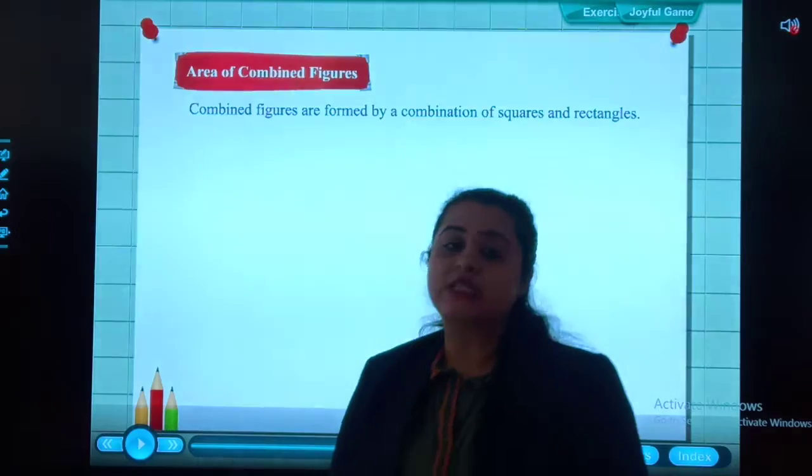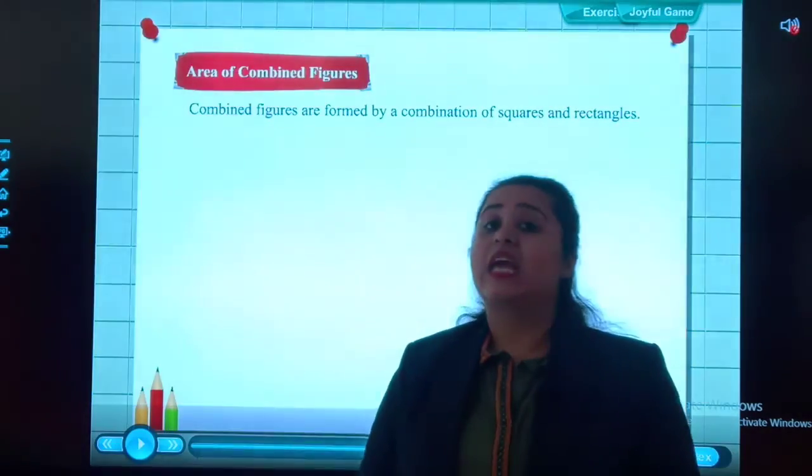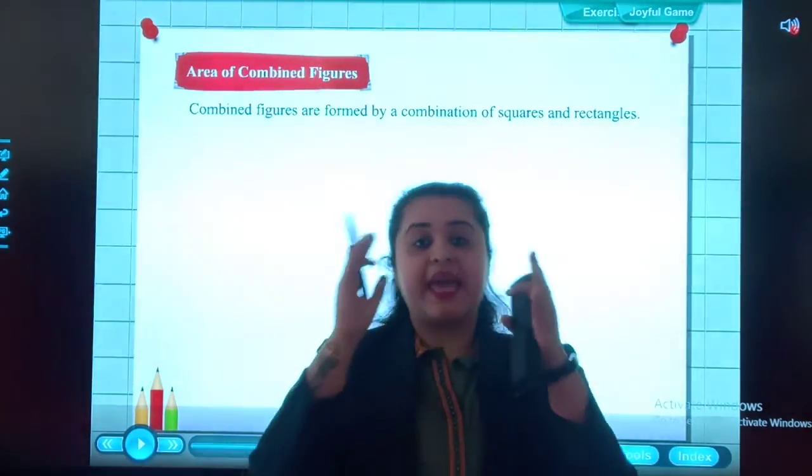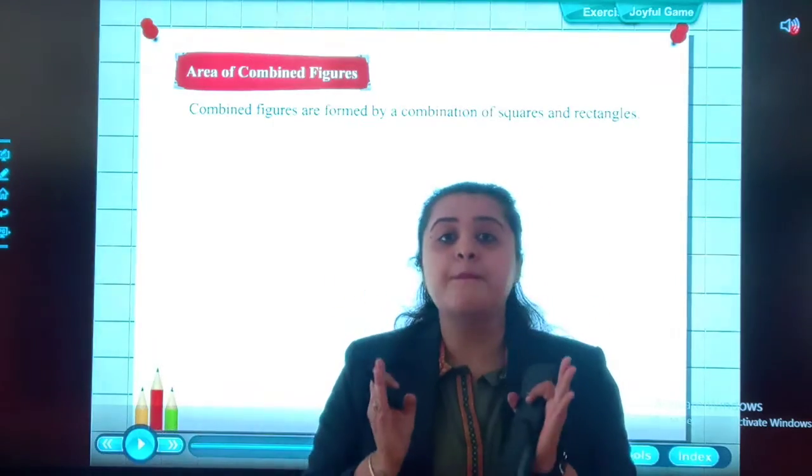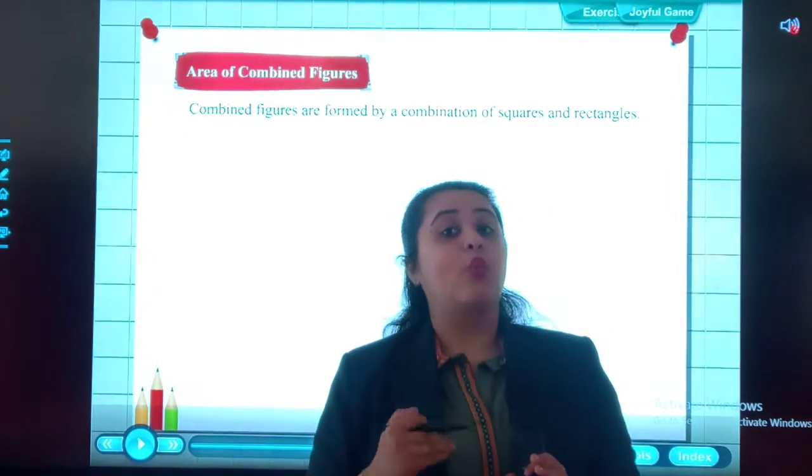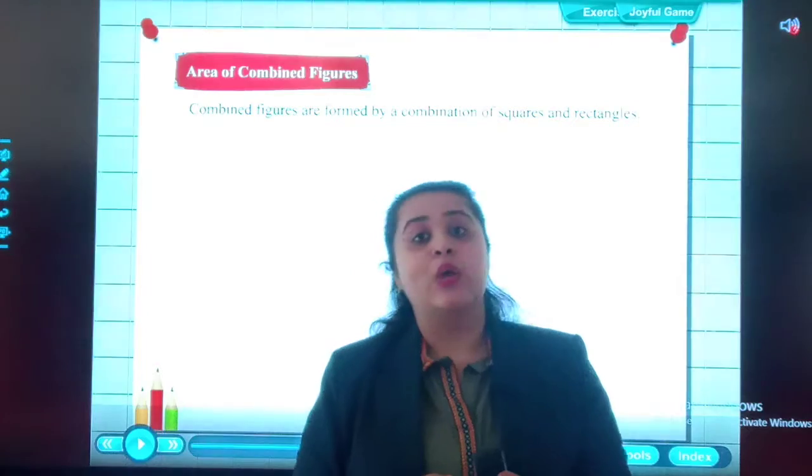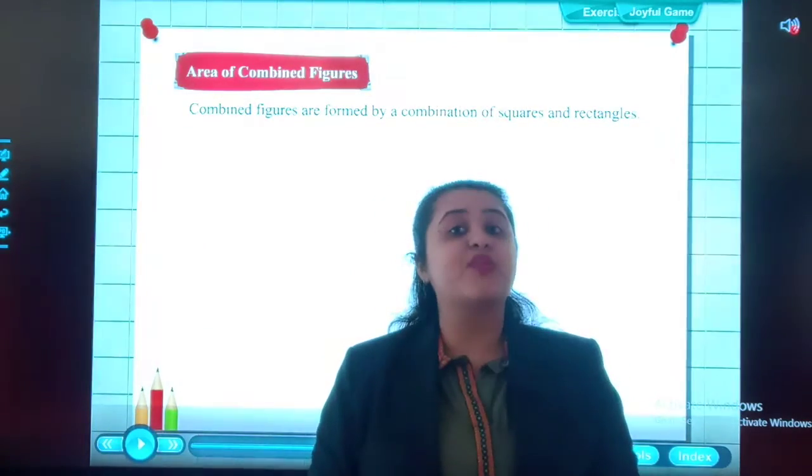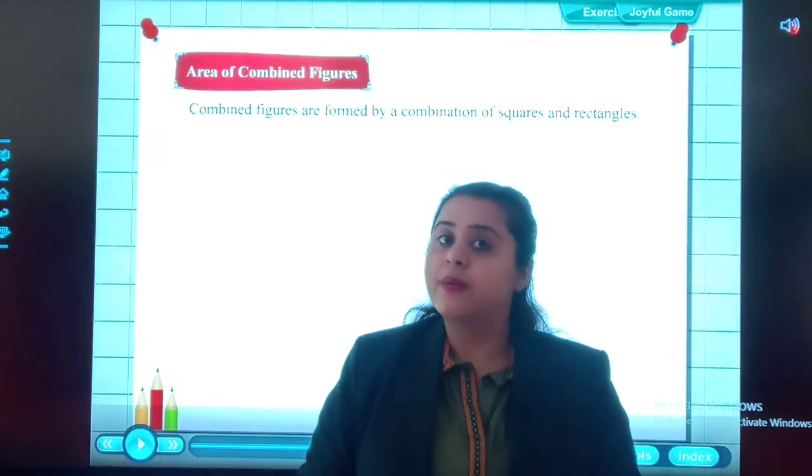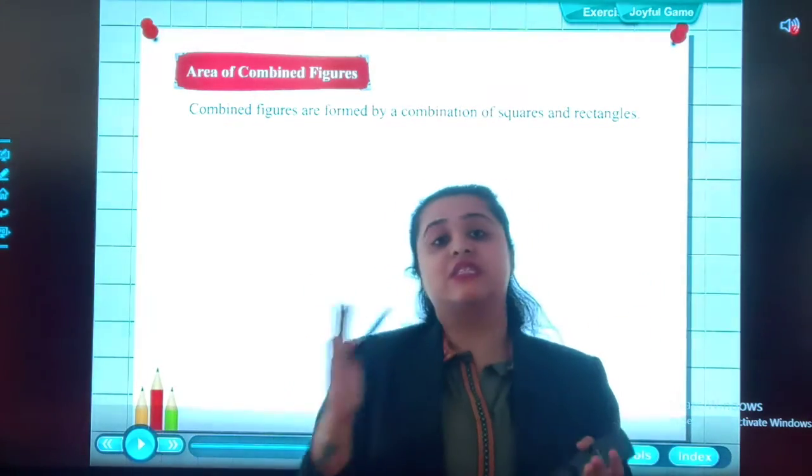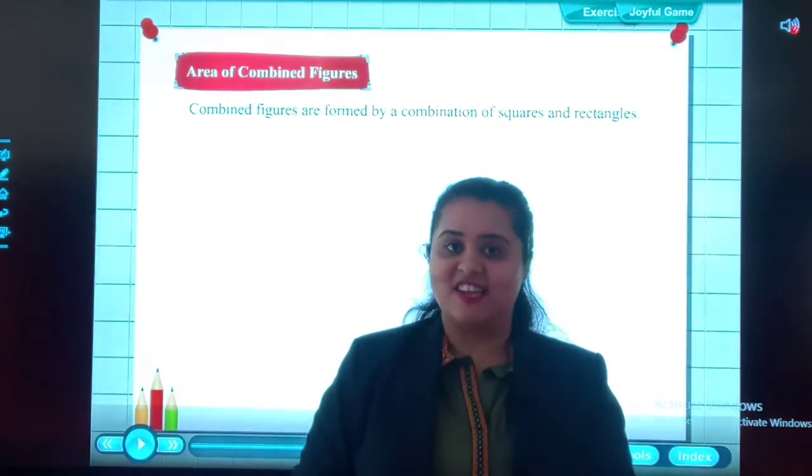Students, area of combined figures is on page number 171 of your textbook. Combined figure means a figure made up of rectangles as well as squares. We are supposed to find the area of that combined figure. It is very easy when we know that area of rectangle equals length into breadth and area of square equals length into length.